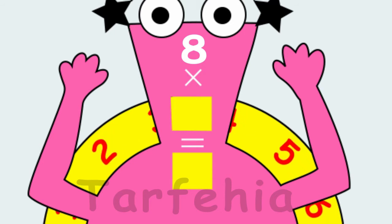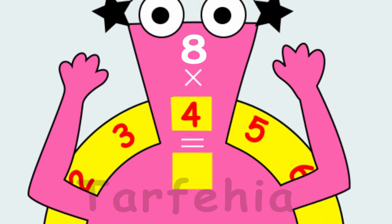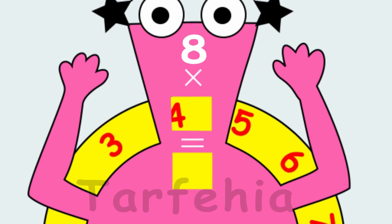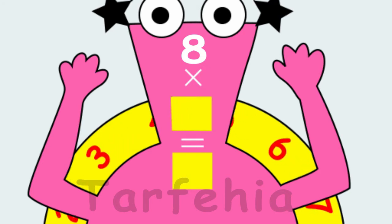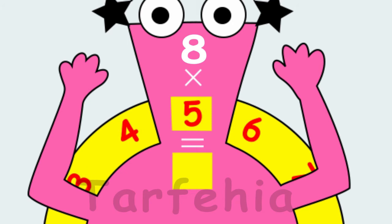8 times 4 equals 32. 8 times 5 equals 40.